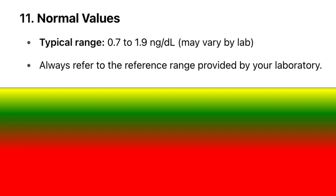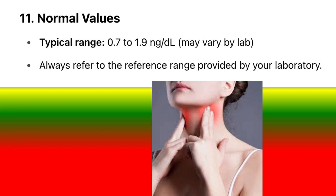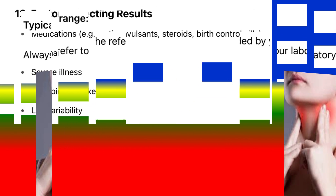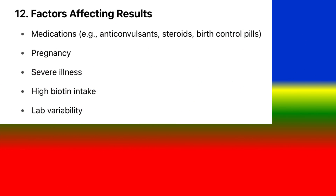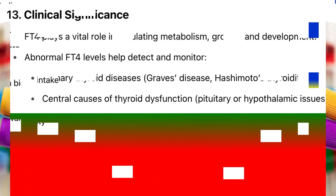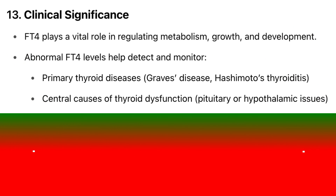The typical normal range is 0.7 to 1.9 nanograms per deciliter, though this may vary by lab — always refer to your laboratory's reference range. Factors affecting results include medications such as anticonvulsants, steroids, and birth control pills, as well as pregnancy, severe illness, high biotin intake, and lab variability.